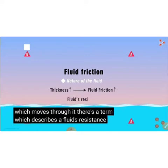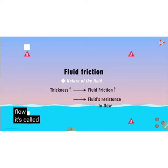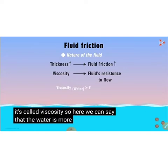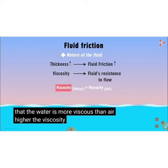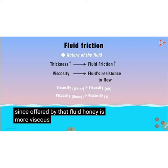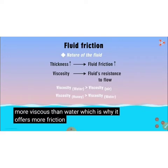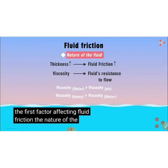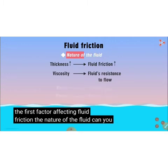There is a term which describes a fluid's resistance — it's called viscosity. Water is more viscous than air. Higher the viscosity, more will be the fluid friction offered by the fluid. Honey is more viscous than water, which is why it offers more friction than water. So that was the first factor affecting fluid friction: the nature of the fluid.